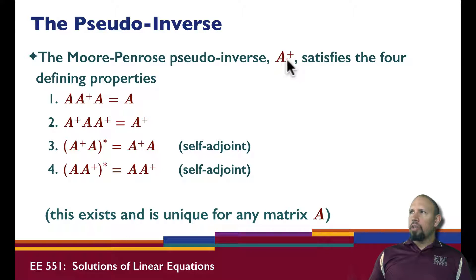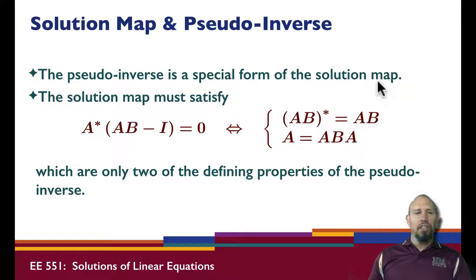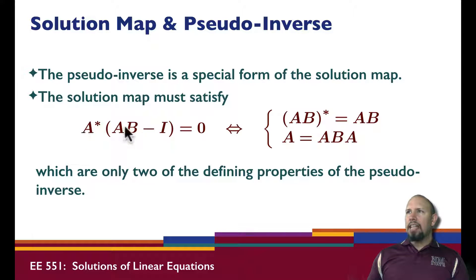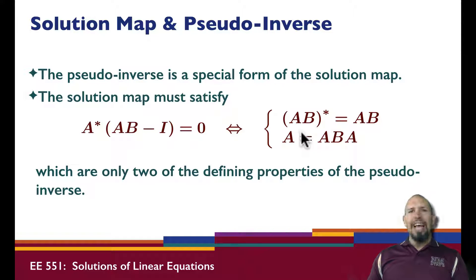For the Moore-Penrose pseudo inverse, these are the defining properties. Now how does that relate to the solution map? The pseudo inverse is a special case of the solution map — for both the over-determined problem and the under-determined problem. For the over-determined problem, we had the equation associated with the normal equation, and I can show that this single equation is equivalent to two of those conditions. Notice these two conditions are only two of the four defining properties; the pseudo inverse satisfies these two and then some.